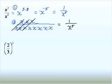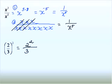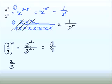Two-thirds squared: the whole quantity is being squared, so we use the power of a quotient property. When taking a fraction to a power, write the numerator to that power over the denominator to that power: 2 squared over 3 squared gives 4 over 9. Make sure you're squaring the numbers and not multiplying the exponent by the number. Alternatively, 2 thirds squared is 2 thirds times 2 thirds, which also equals 4 ninths.